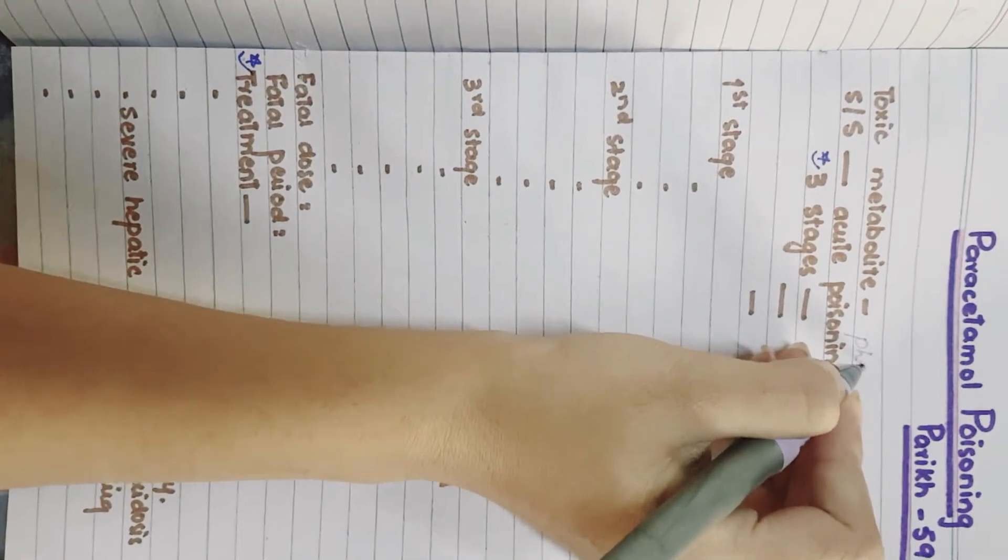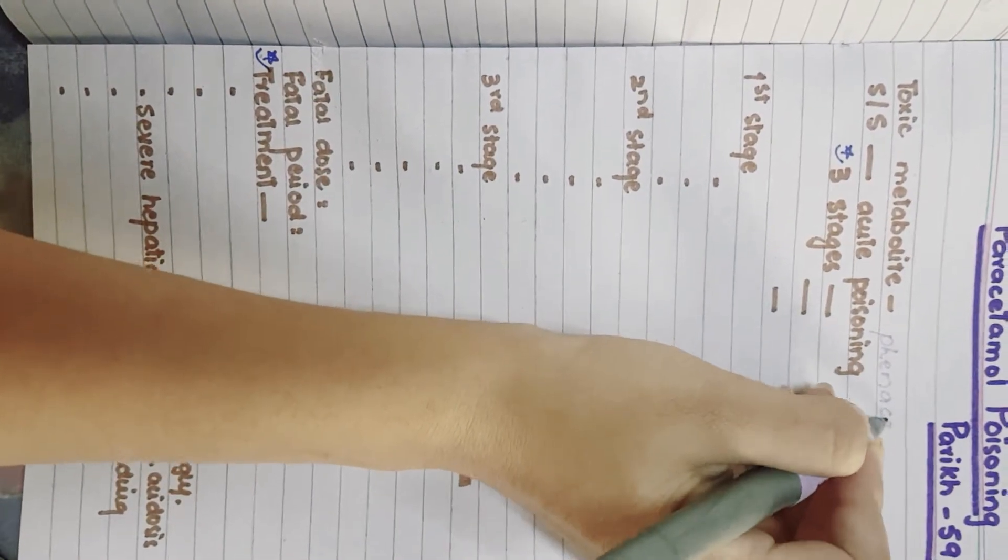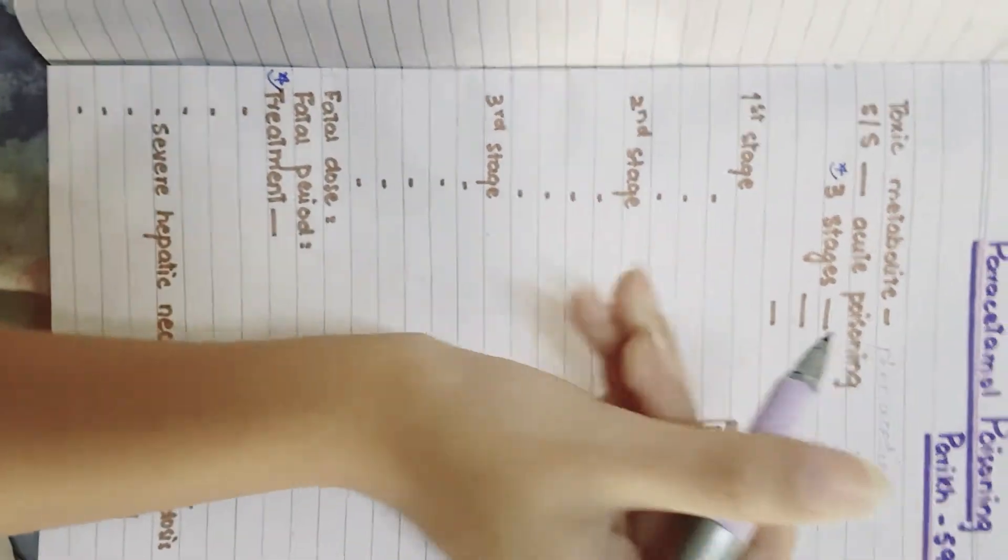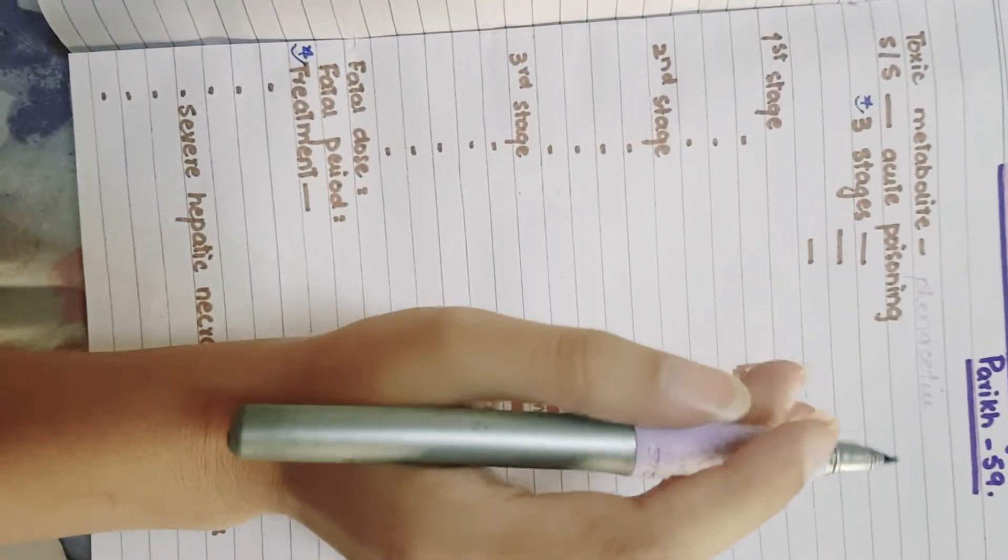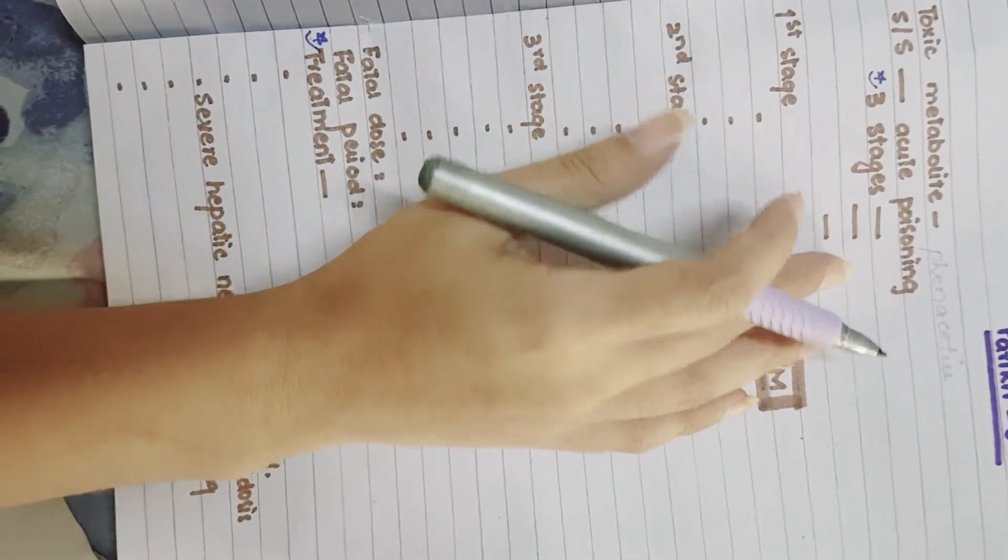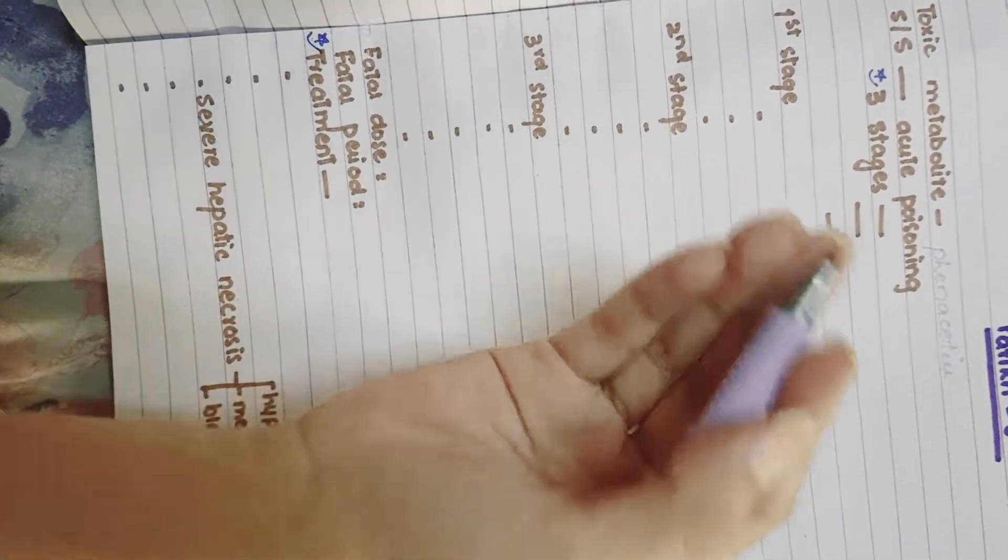The signs and symptoms in acute poisoning do not behave like that of aspirin, so there are no dangerous signs and symptoms initially. There are three stages.